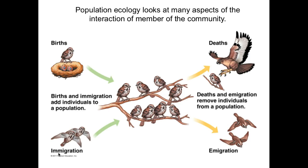When we look at population ecology, we have to consider everything that can happen within a population: births, deaths, immigration (other individuals of the same species moving into the area), and emigration (individuals leaving the area). The balancing act between all of these — births and immigration leading to growth, deaths and emigration leading to decline — must all be considered when studying population ecology.